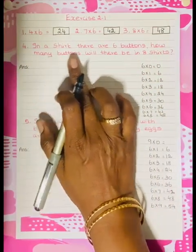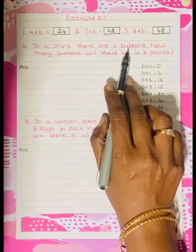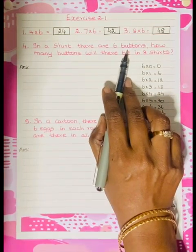Now we are going to see the statement problem. In a shirt there are 6 buttons.